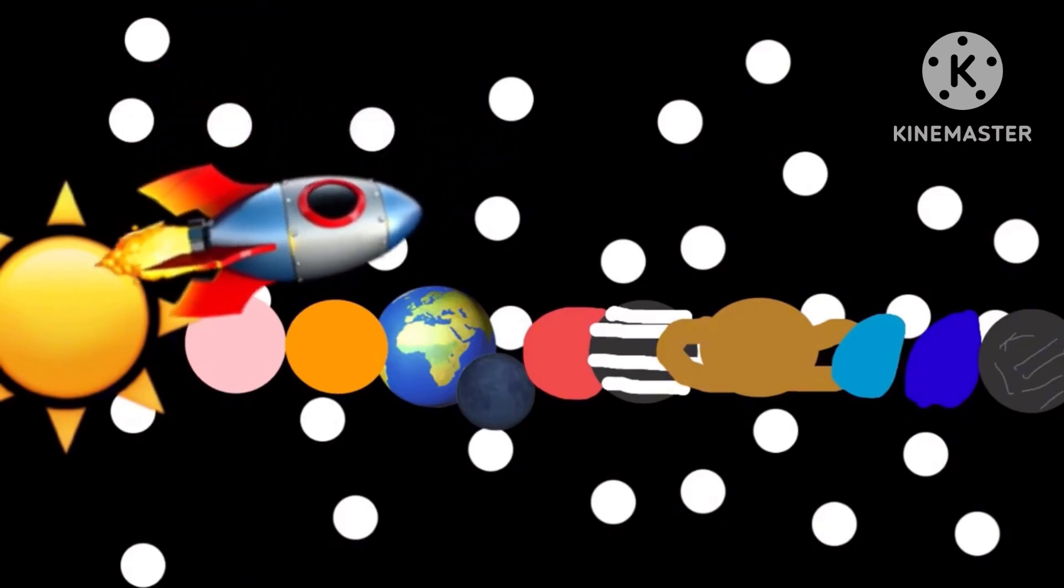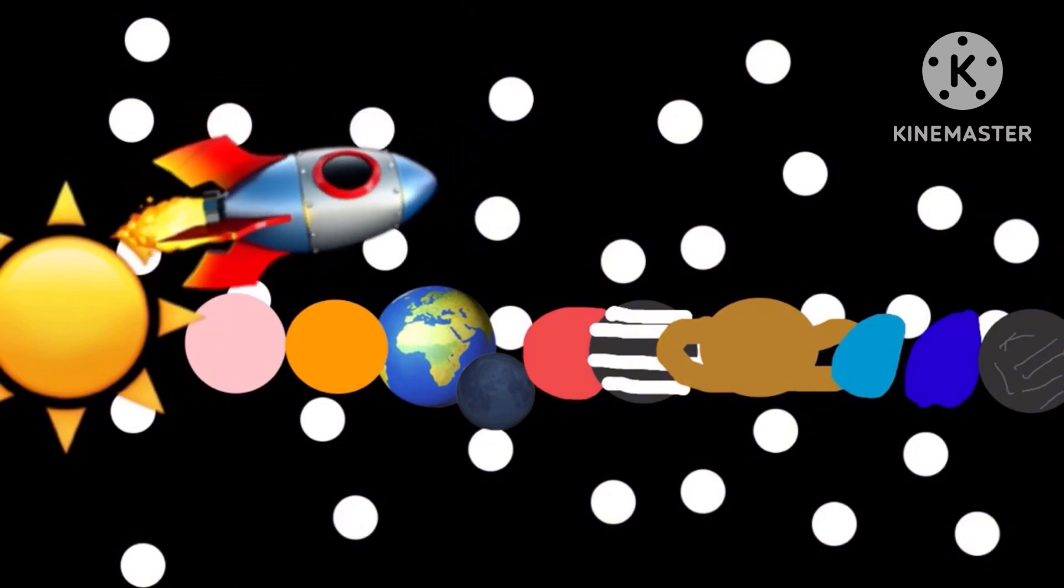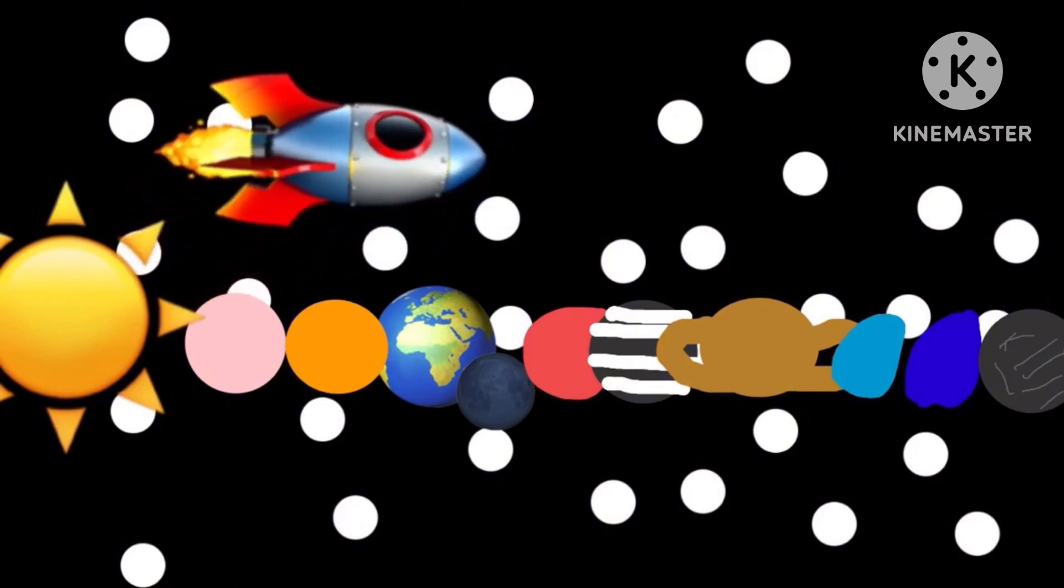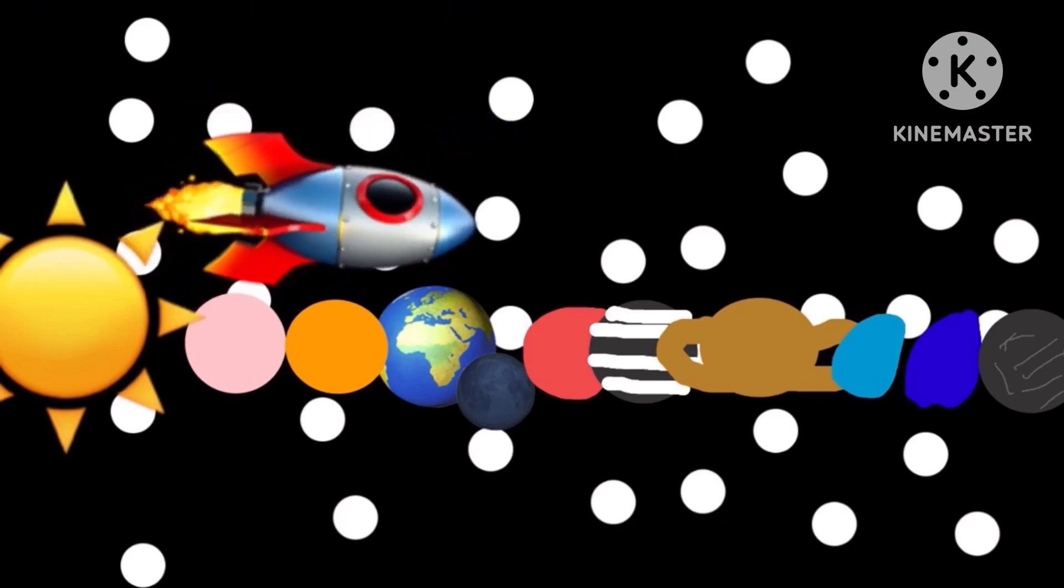So Sun is the hottest planet of the solar system. Sun loves the planets every day. Before 11 planets. Mercury is the first planet in our solar system. So Mercury goes after the Sun.